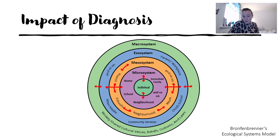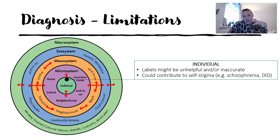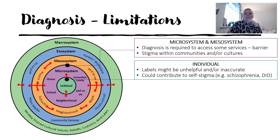In terms of limitations: individually, a diagnosis label might be unhelpful or inaccurate. If someone says 'I'm diagnosing you as schizophrenic,' I might think that doesn't fit with me and there's quite a lot of stigma around that, which could contribute to self-stigma too. It might make you feel differently about and relate differently to yourself — because this diagnosis has almost changed who you are, or it's trying to explain your behaviour when it doesn't actually fit.